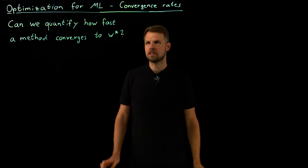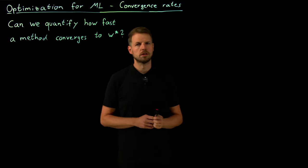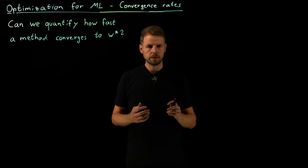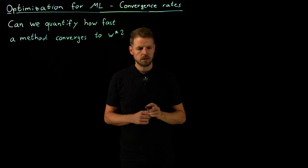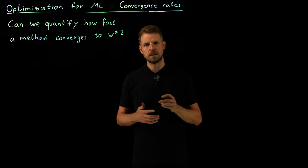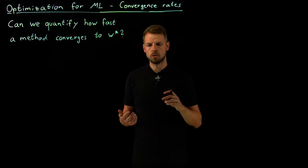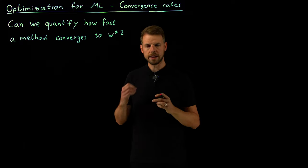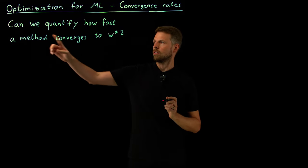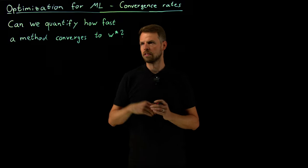Hi everyone, welcome to the next part on optimization for machine learning. This one is going to be a little bit more theoretical or conceptual, but we are going to cover a very important topic: convergence rates. The central question, which I've written down already, is: can we quantify how fast a method converges to W star, the optimal weight vector?